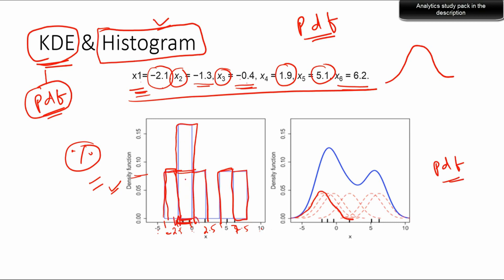For x1 equal to negative 2.1, we place a normal probability density function curve. Instead of a box, we put a normal PDF which is Gaussian in nature. For the second bin where we had two stacked boxes, we instead place two normal distributions. Then another normal distribution for the third, one for the fourth, one for the fifth. The second and third overlap, so you simply add them up. The summation gives a higher peak, and you create a final curve.